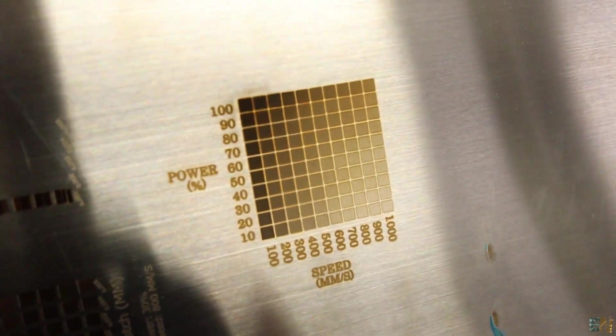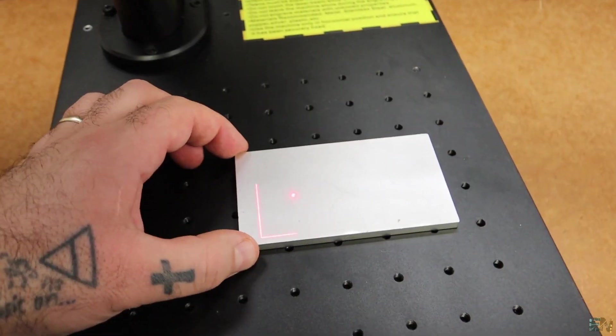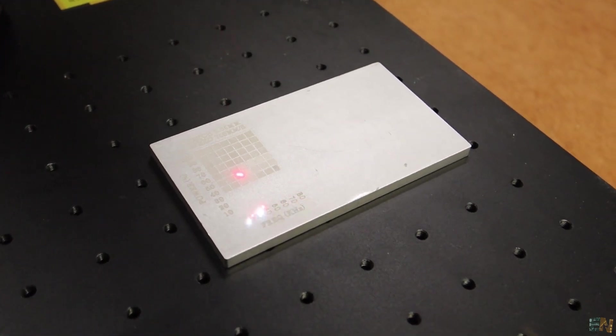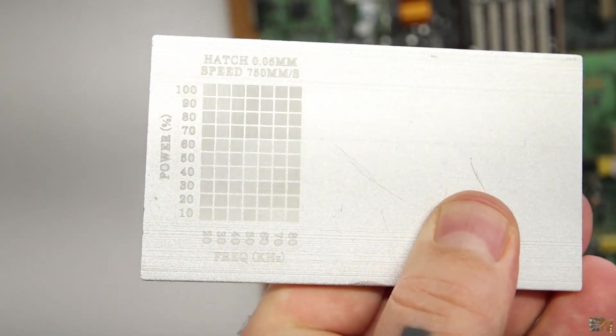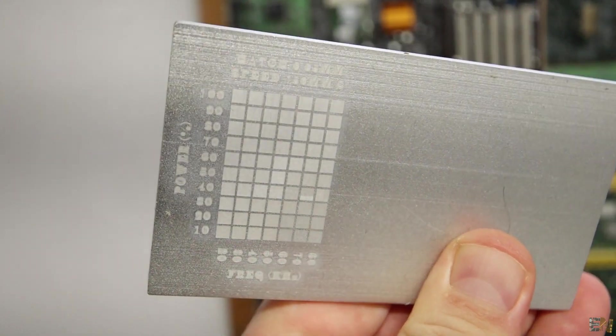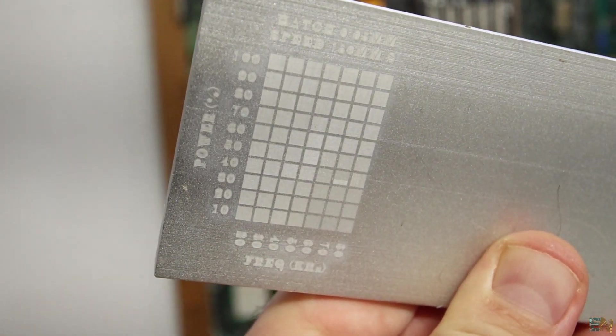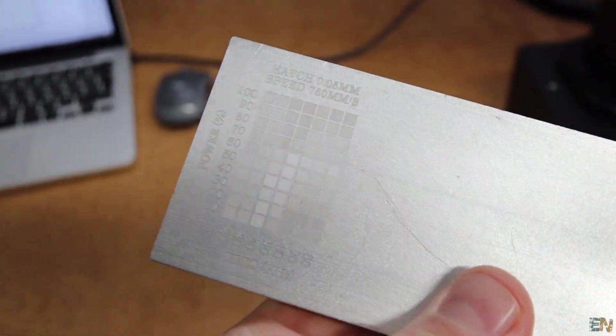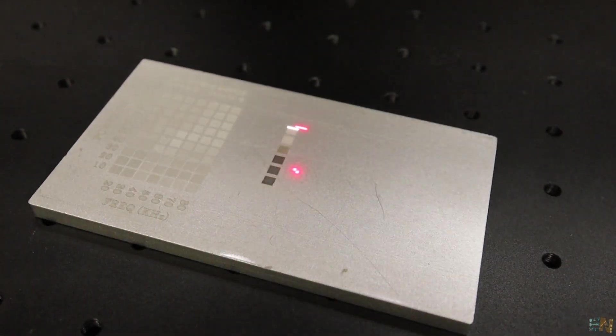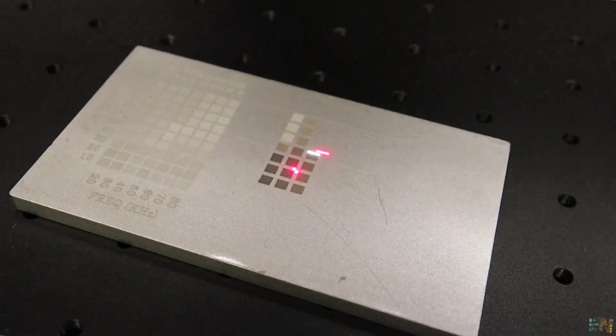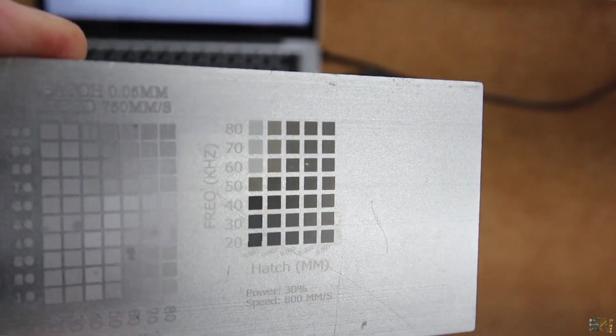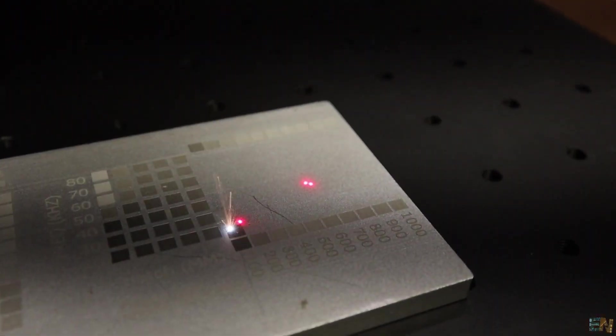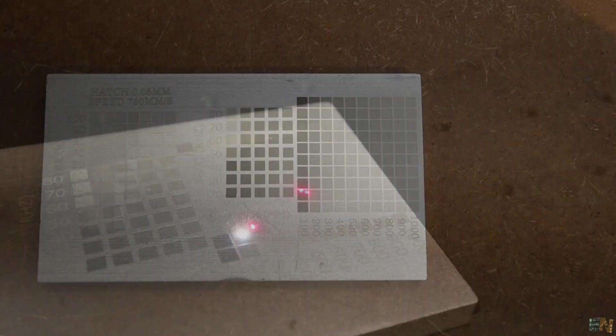Now let's test it on aluminum and the first test was power and frequency. As you can see we can easily engrave on aluminum as well, but this time the color palette is not that spread. We can get some white and grey tones of the colors. I've made the next print of frequency and hatch value. This time the color palette was a lot better. The final test was also speed and power and I've got these results on aluminum.